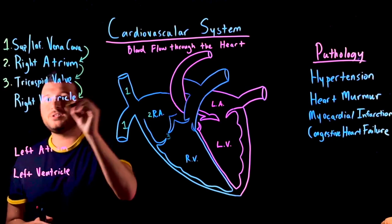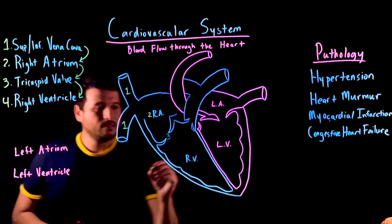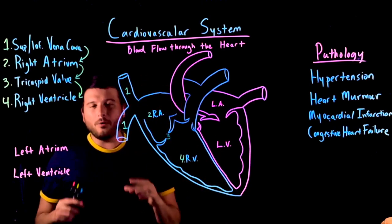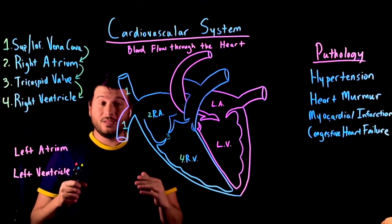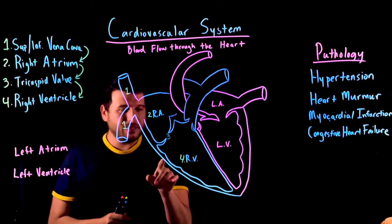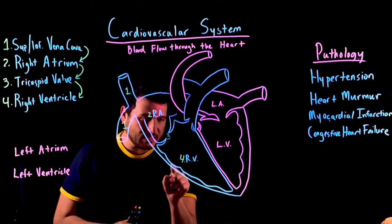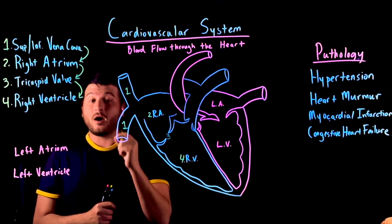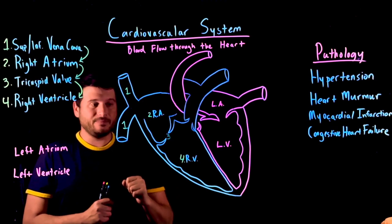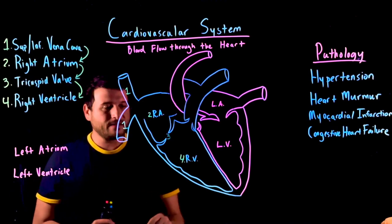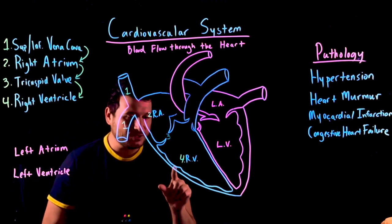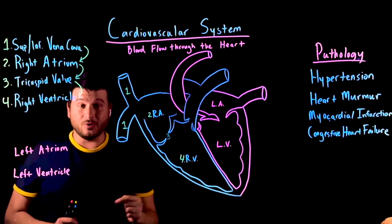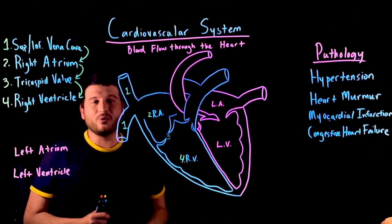So that tricuspid valve separates the right atrium from the right ventricle. Now we have entered the right ventricle. The ventricles are more muscular than the atria. There's this area here representing myocardium — that is heart muscle in Latin. One interesting fact: notice that the right ventricle myocardium is thinner than the left ventricle myocardium. That will be important later.